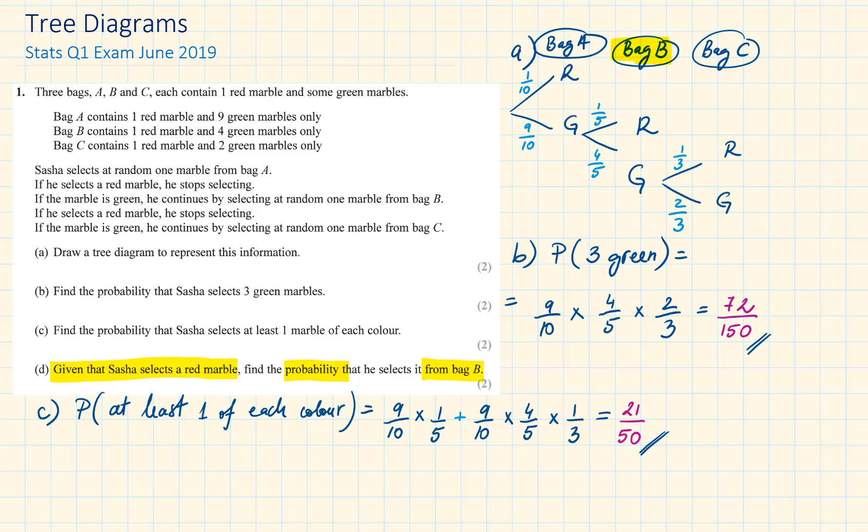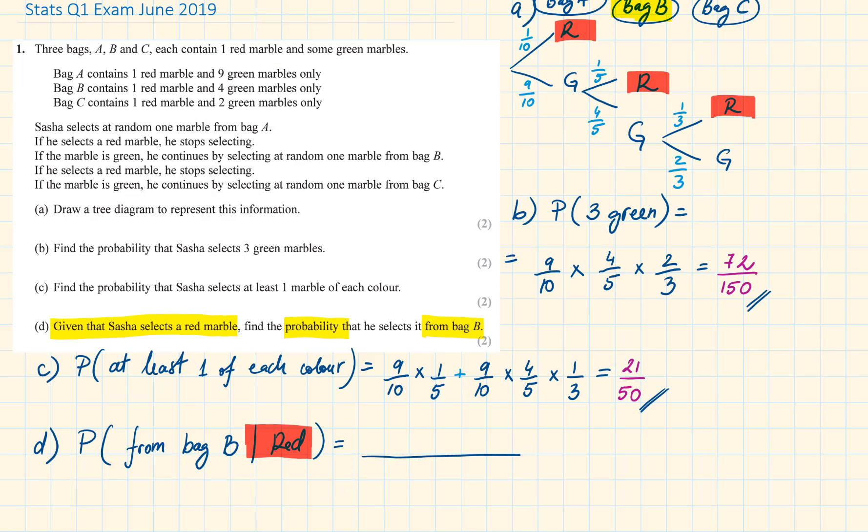Given that Sasha selects a red marble, find the probability that he selected from bag B. Here we have a conditional probability. Given that he selects a red marble, so we are looking at the world of the red. So the denominator of this will be the probability of picking a red. And the numerator will be the intersection of picking a red with picking it from bag B. There are three ways that we can pick a red marble.